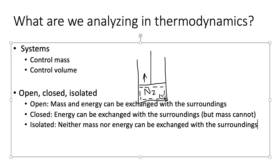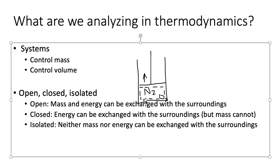Next, the control volume defined as an imaginary rectangular boundary where the piston starts, with rigid boundaries that don't change as the piston moves — that's actually an open system. Energy can be exchanged if you put a flame under the piston. And since the volume is rigid, mass can be exchanged too: as the piston goes up, nitrogen and oxygen will leave the control volume and go up in the diagram, leaving through the imaginary boundary that remains fixed.